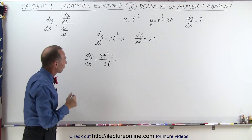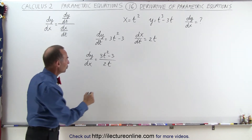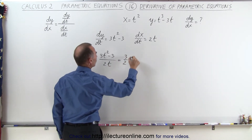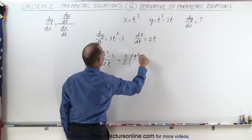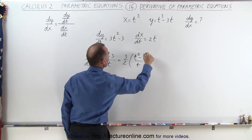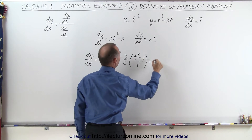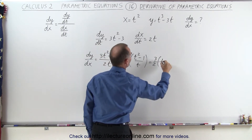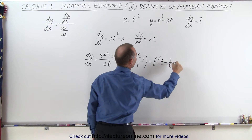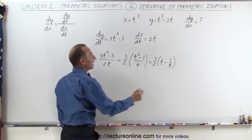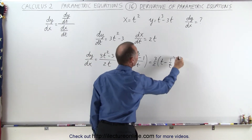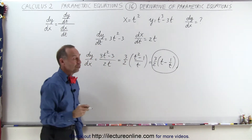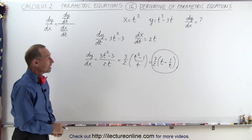Notice we can factor out a 3 over 2. So this can be written as 3 over 2 times t squared minus 1 over t, which can also be written as 3 over 2 times t minus 1 over t. So here we have the derivative of y with respect to x, and notice it's a function of t.